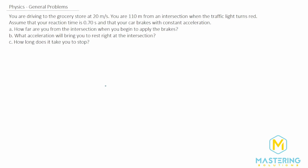Welcome to Mastering Solutions. In this general problem, they tell us that you're driving to the grocery store at 20 meters per second, and when you're 110 meters from an intersection with a red traffic light, your reaction time is 0.7 seconds and you brake with constant acceleration.